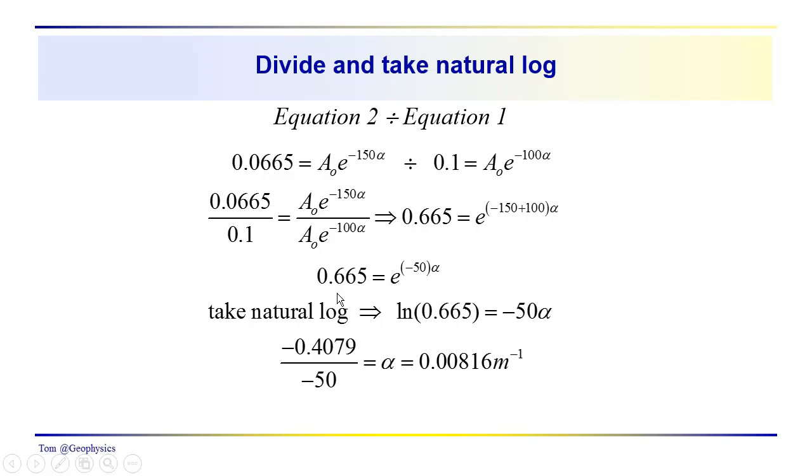So we just take the natural log of both sides. That gives us the log of 0.665 is equal to, when we take the log of e to some power, we just get the power that we have to raise e to in order to get that number. So this turns out to be minus 50 alpha. And then it's easy to go from there and solve for alpha. We get that alpha is equal to, notice that the minus signs do cancel out. We do get the attenuation factor equal to 0.00816, and this would be in inverse meters, the units of inverse meters.